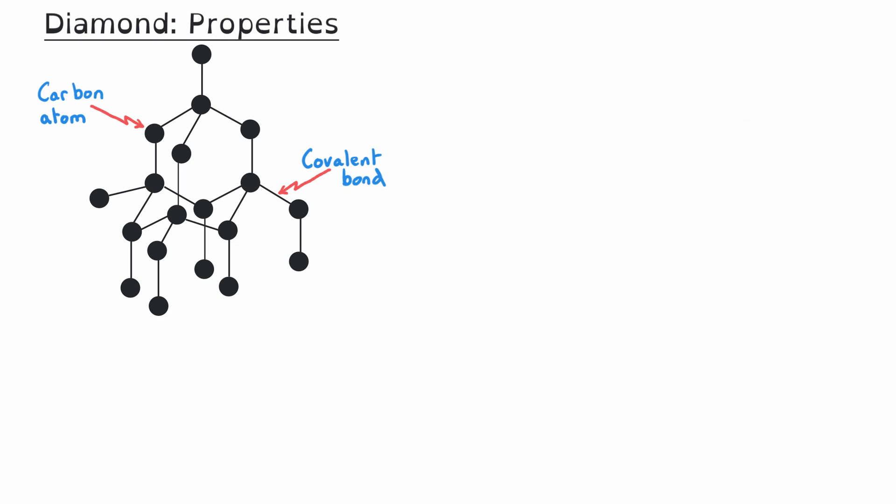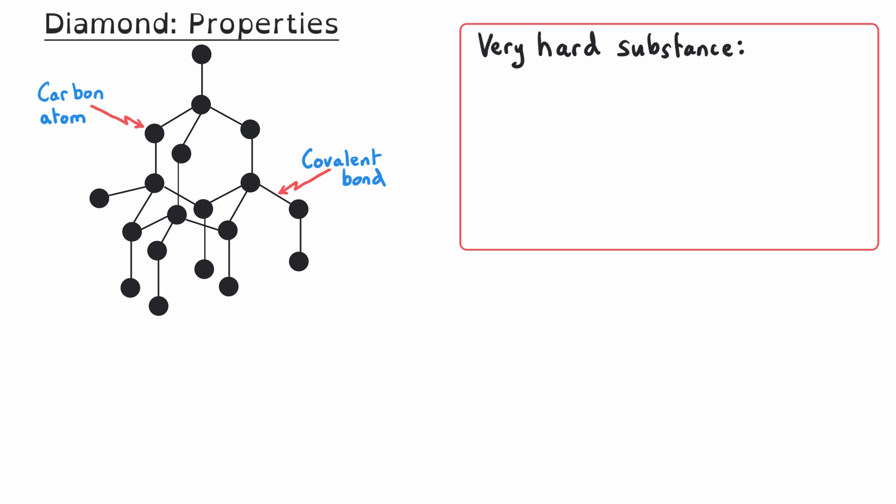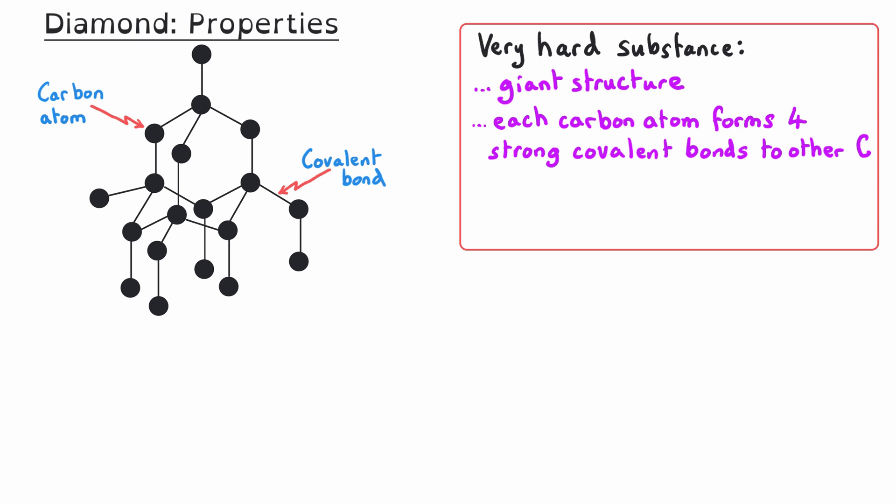There are three properties of diamond you need to know about, each caused by its structure and bonding. First, diamond is a very hard substance, meaning it resists being deformed, and its surface can withstand penetration, abrasion, and scratching. The reason for this is its giant structure, where each carbon atom forms four strong covalent bonds to other carbon atoms. These bonds are difficult to break and require a lot of energy, so no carbon atoms can move in this rigid three-dimensional tetrahedral structure.